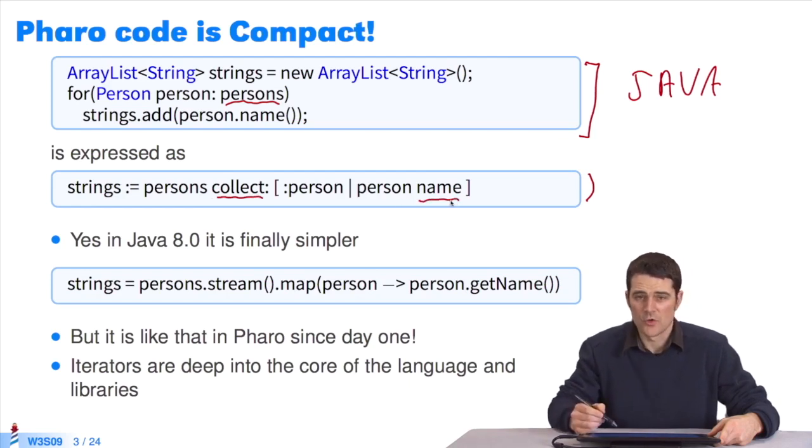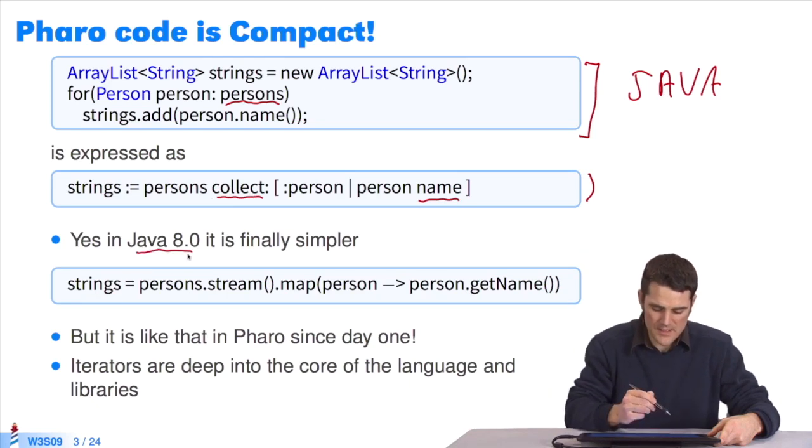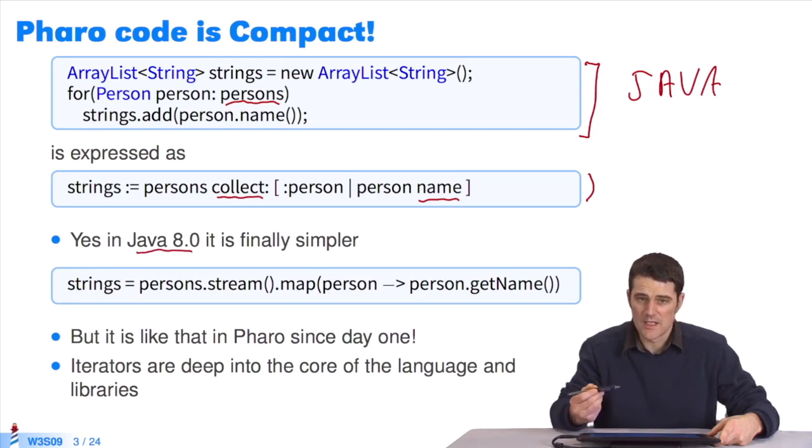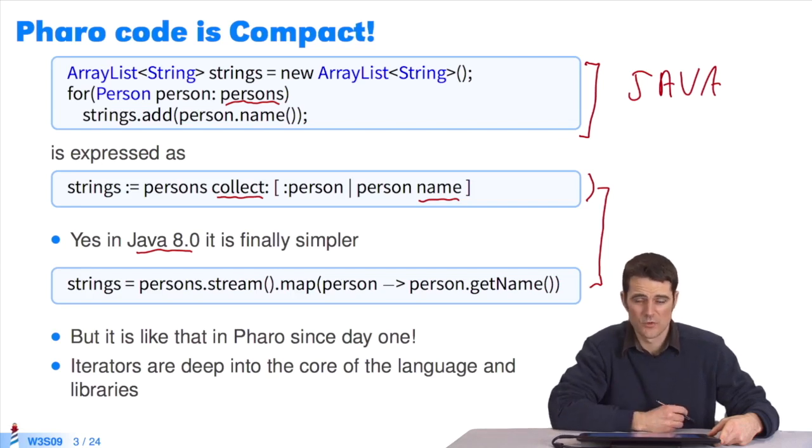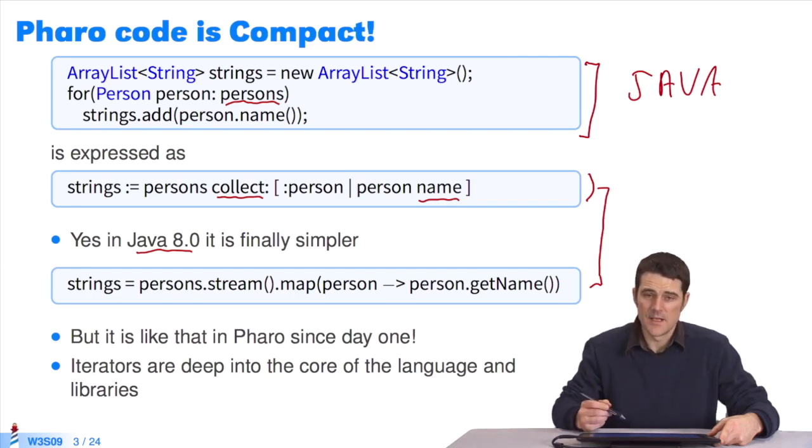By the way, in Java 8, the latest version of Java, they've introduced blocks, the equivalent of lexical closures. As a result, the syntax is close to Pharo's. But in Pharo, we've had it since the beginning. It's at the heart of the language. It gives a big power of expression to a programmer.